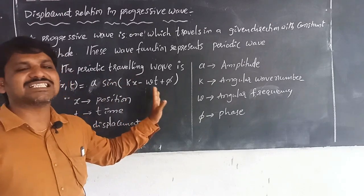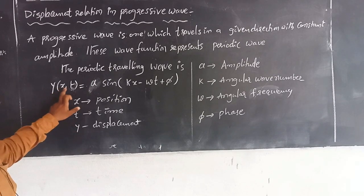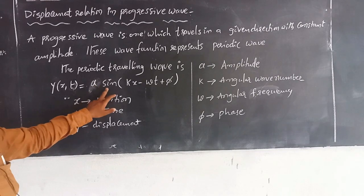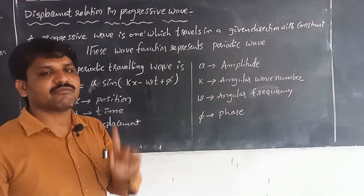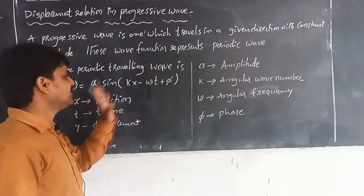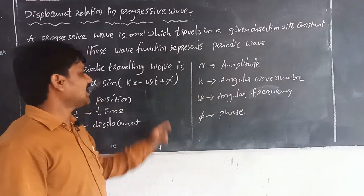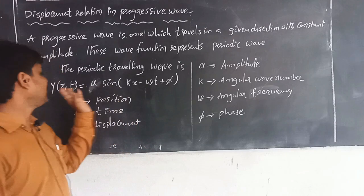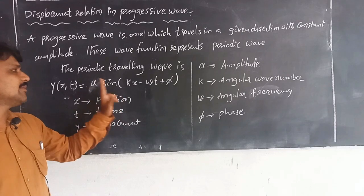Here, y is the displacement with respect to position and time; x is the position; t is the time; A is the amplitude; k is the angular wave number — the number of waves in a given distance; omega (ω) is the angular frequency; and phi (φ) is the phase angle. So the displacement relation is: y(x, t) = A sin(kx − ωt + φ).